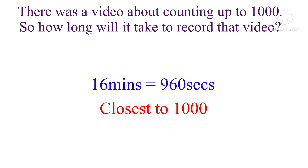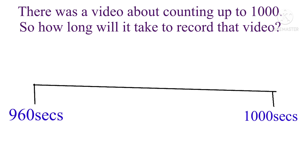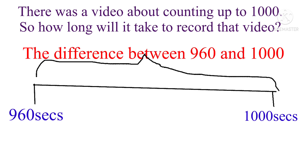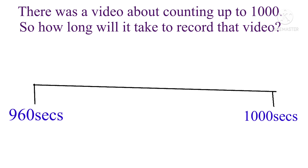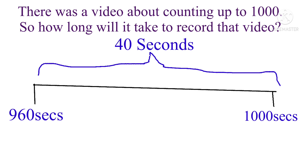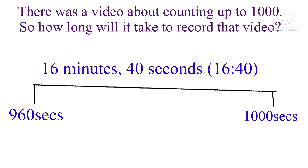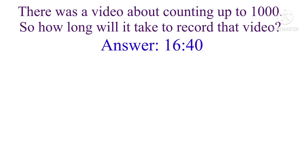All we've got to do now is look at what's remaining. We have 16 minutes which is 960 seconds. We have 1000 seconds, and 960 seconds covers 16 minutes — the remaining is 40 seconds. So we add those 40 seconds to the 16 minutes and we get 16 minutes and 40 seconds. So the answer is 16 minutes and 40 seconds — a 1000-second video is 16 minutes and 40 seconds long.